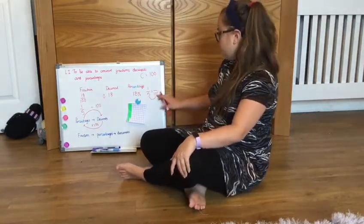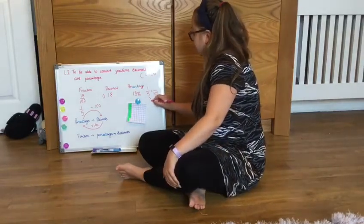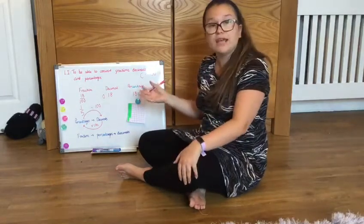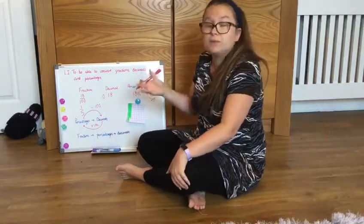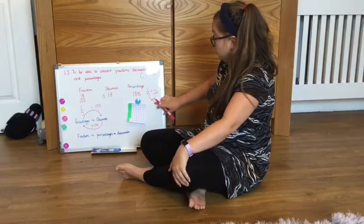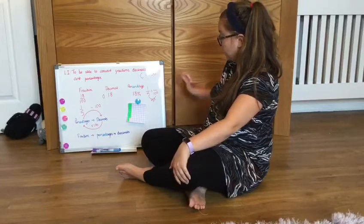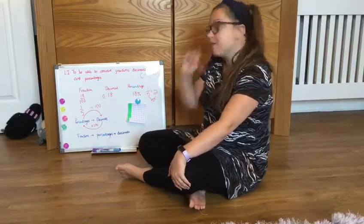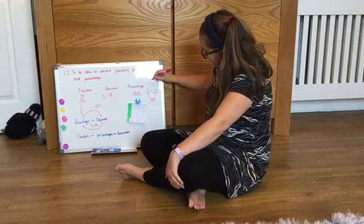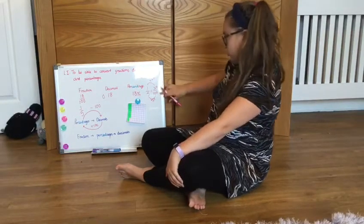So 5's into 100 - 5 times 20. I knew that because 5 times 10 is 50, and if I double that amount I get 100, so therefore I have to double my 10 to get 20. So 5 times 20 is 100. Now remember whatever I do to the bottom I have to do to the top, so I'll multiply that by 20. So I've now got 20 over 100.